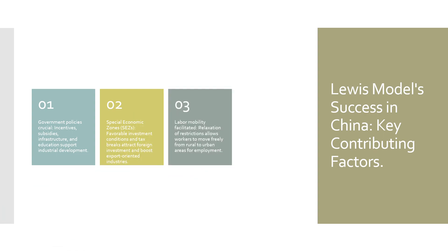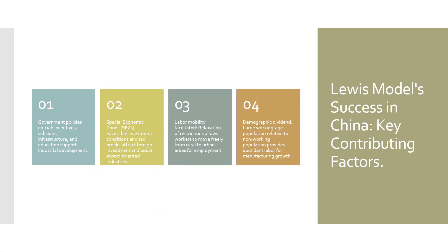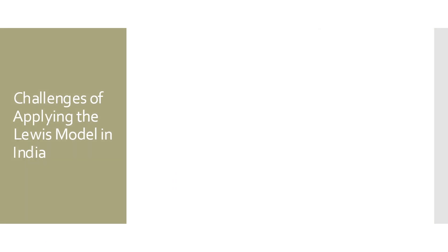Labour Mobility: the Chinese government relaxed restrictions on labour mobility, allowing workers to move freely from rural to urban areas in search of employment opportunities. Demographic Dividend: China experienced a demographic dividend, with a large working-age population relative to its non-working population, providing a plentiful supply of labour for the expanding manufacturing sector.